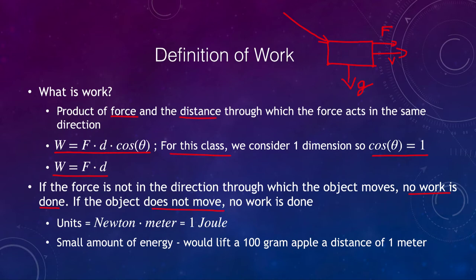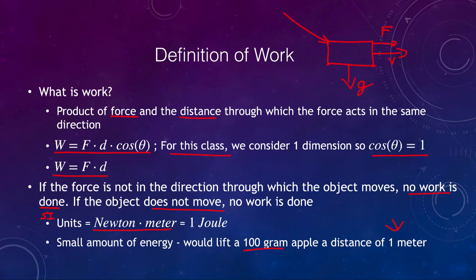For example, you can sit there and push against a wall all day as hard as you can — you are doing absolutely no work because the distance moved is zero. If it does not move, then no work is being done in a physical sense. The SI units for this are the newton meter, or the joule. One joule is one newton meter and it's a relatively small amount of energy — it would lift a small apple a distance of about one meter up against gravity.